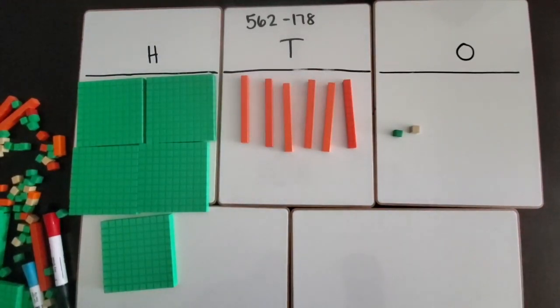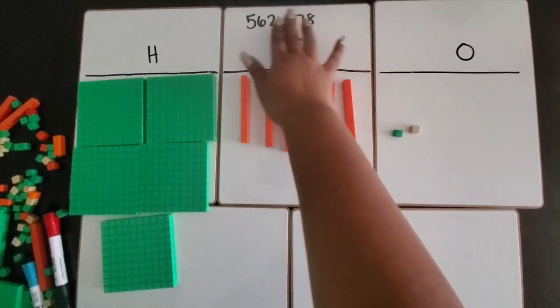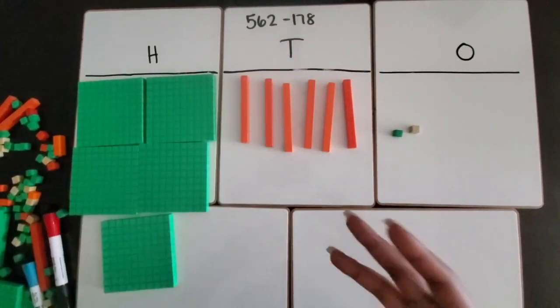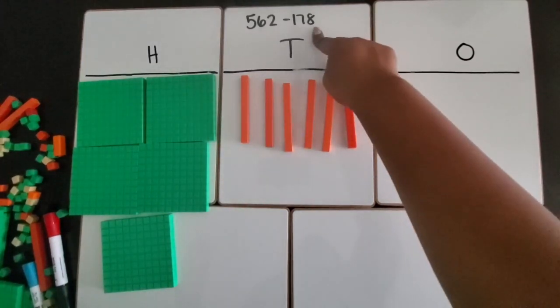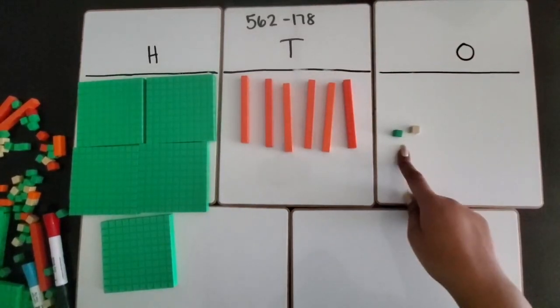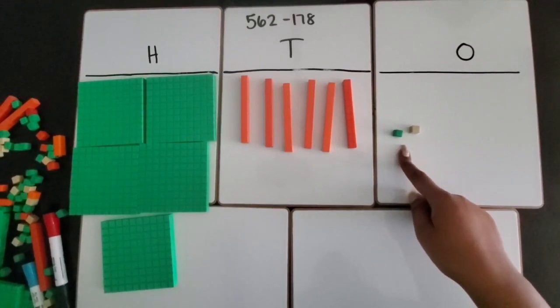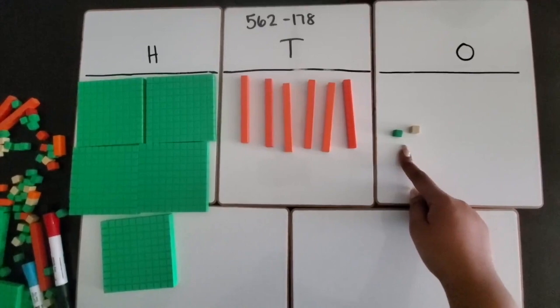You don't have to start in the ones place, but it's more common to start there. To make it more simple, we're going to start in the ones place. I want to subtract eight ones, I only see two ones, so I need to regroup or make an exchange. It's not borrowing because we're not returning it.